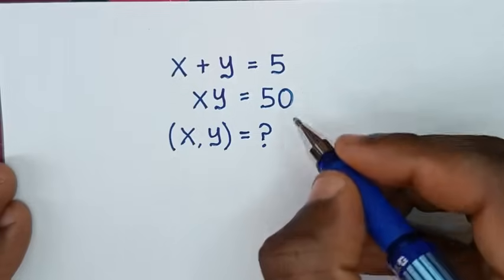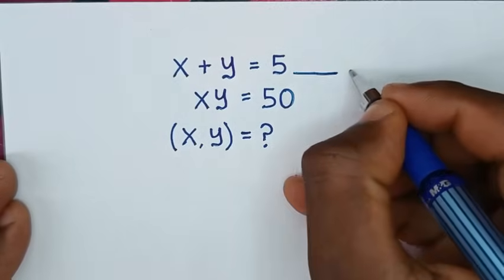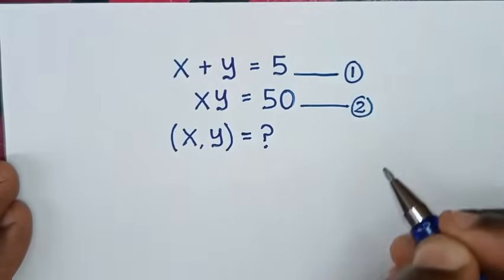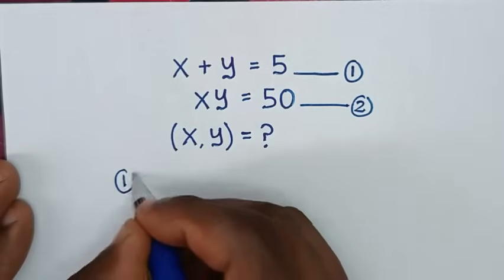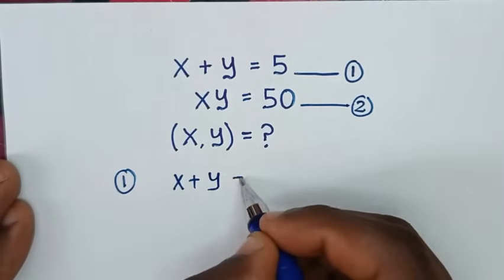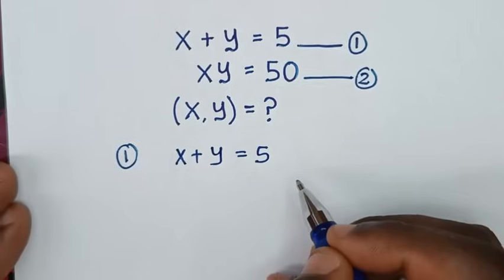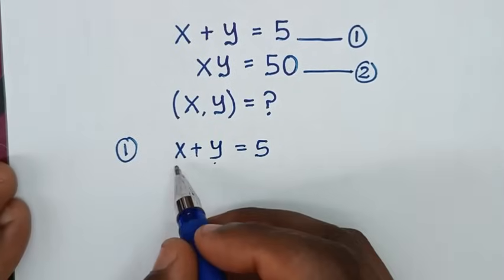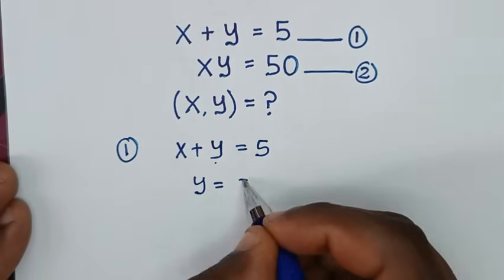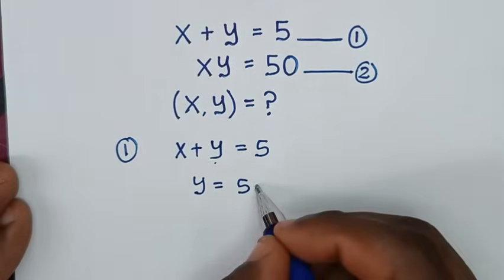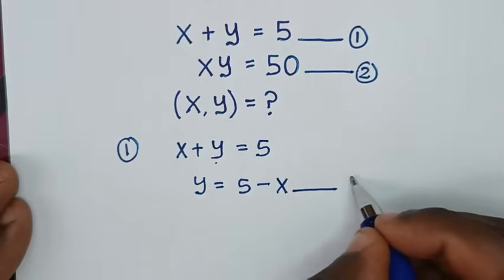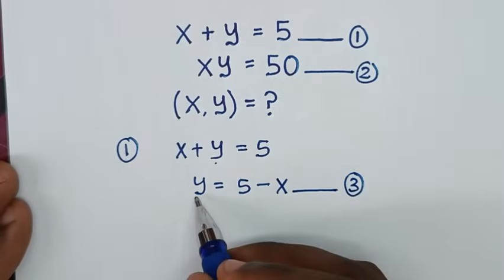In the first step, we'll start by letting x plus y equals 5 as equation 1, and xy equals 50 as equation 2. From equation 1, we'll make y the subject — we take x to the right side, so y is equal to 5 minus x. We'll call this equation 3, expressed in terms of y.